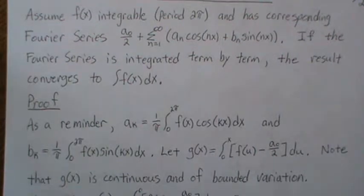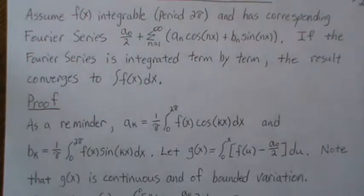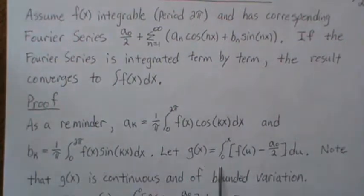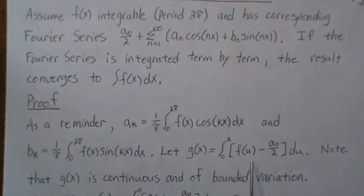And so, it deals with taking a partition of your space and evaluating it at each partition point and then looking at the differences and adding them up and it needs to be finite. That's essentially what bounded variation is. But we're going to assume that this is continuous and of bounded variation. And it is.